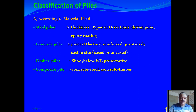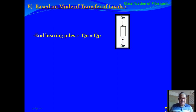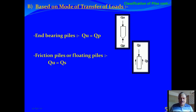The second classification criterion is the mode of load transfer. When the load-carrying capacity is derived by point resistance — when the load is transferred to the firm strata below the tip or bottom of the pile — it is called an end bearing pile. In that case, the load carrying capacity Q equals Qp, the point resistance.